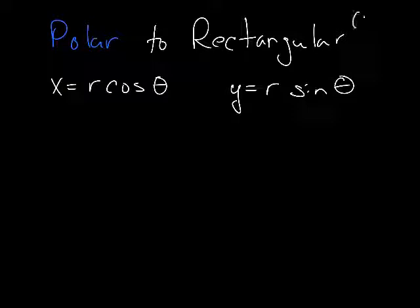Rectangular coordinate systems are X, Y. Polar is just R and theta.